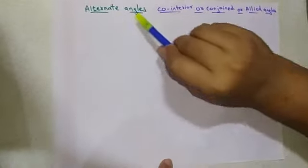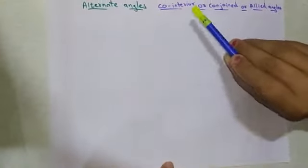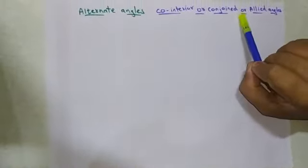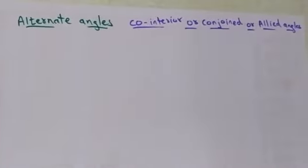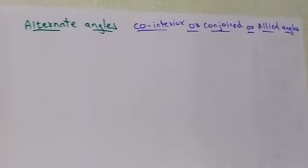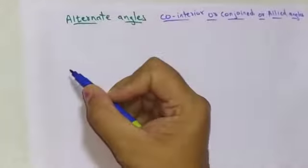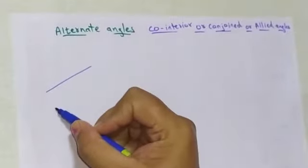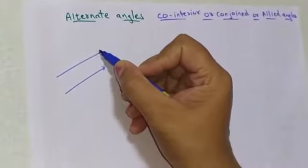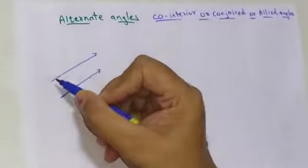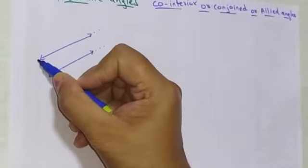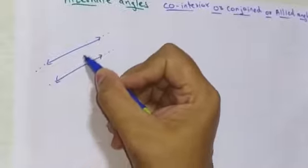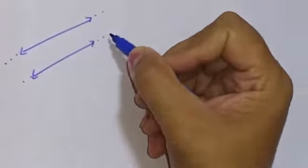Let us study the alternate angles and the co-interior, or co-joint, or allied angles. Before this, we have seen the parallel lines and the transversals. If these are the parallel lines, they can extend at both ends and the distance never changes. They never intersect — they are the parallel lines.